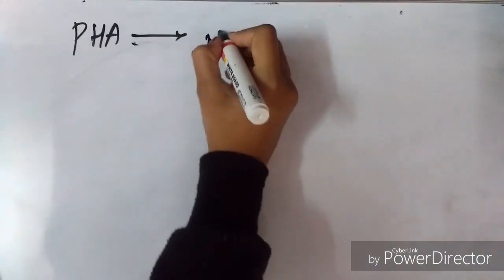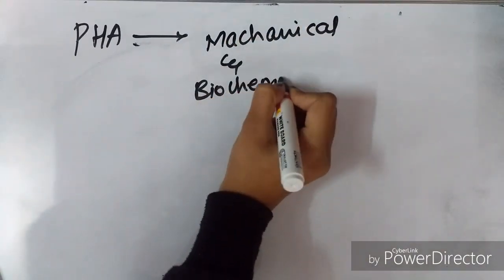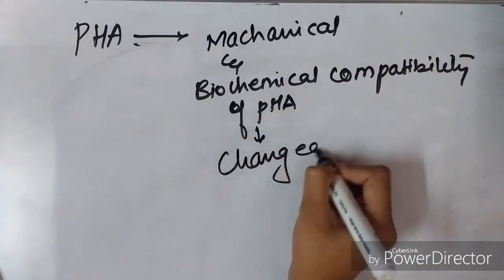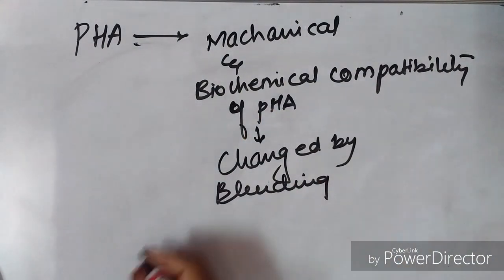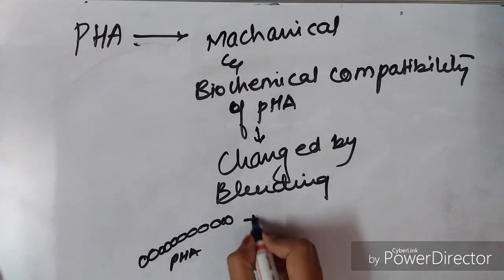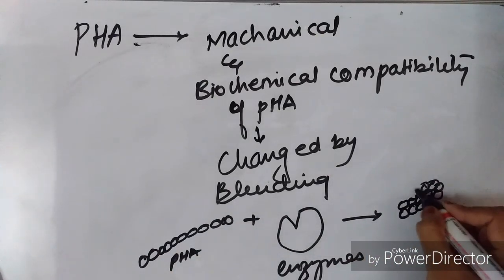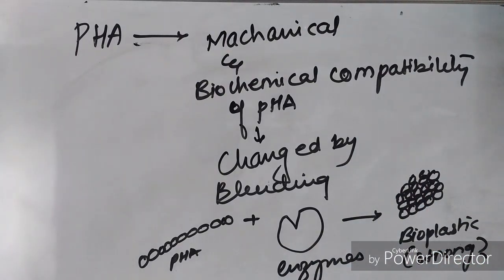The mechanical and biochemical compatibility of polyhydroxyalkanoate can be changed by blending or modifying the surface of PHA with the help of other polymeric enzymes that can make PHA a mechanically stronger bioplastic.